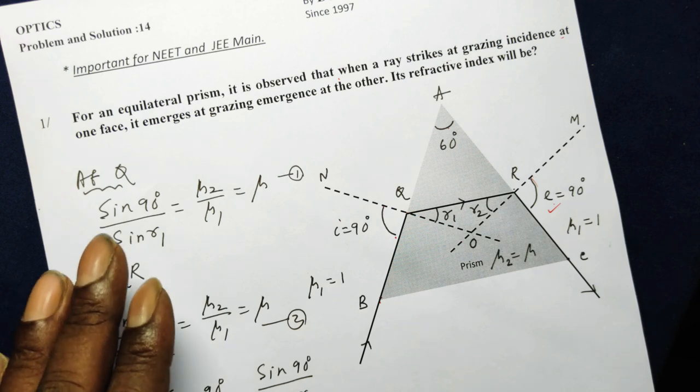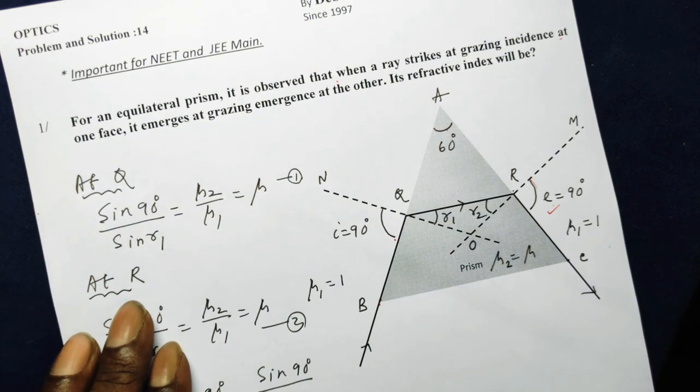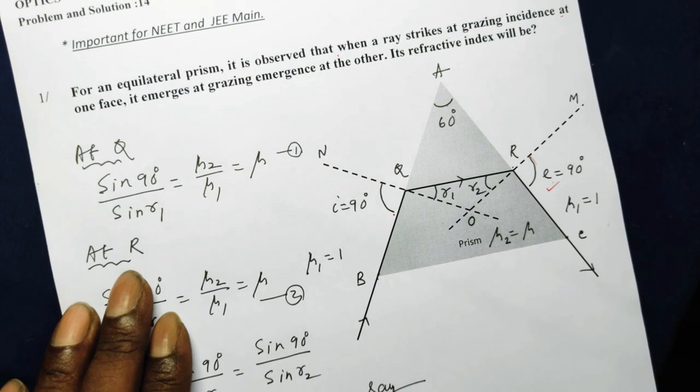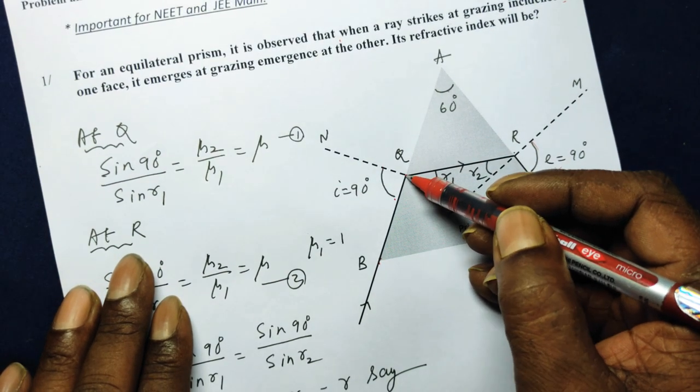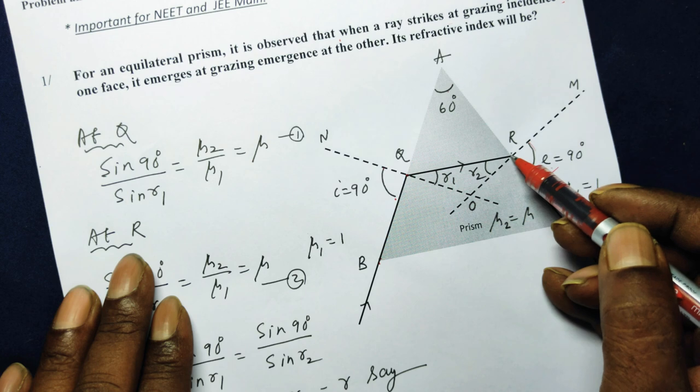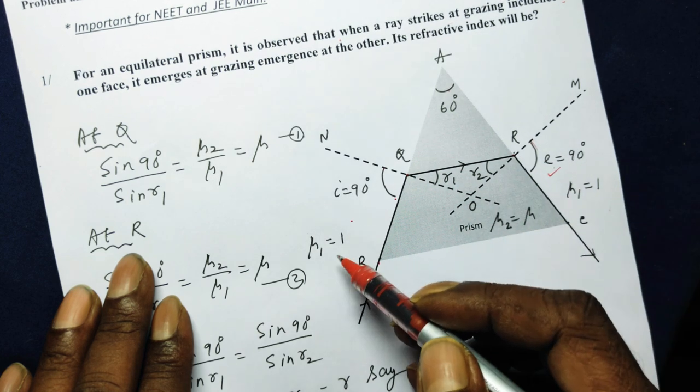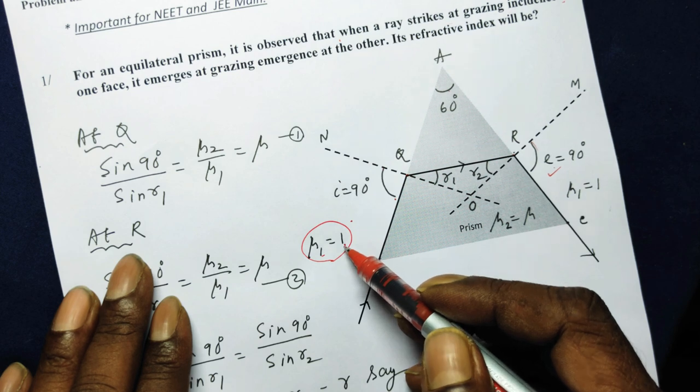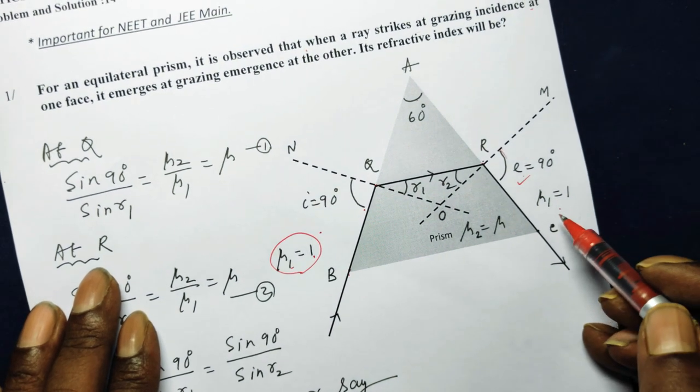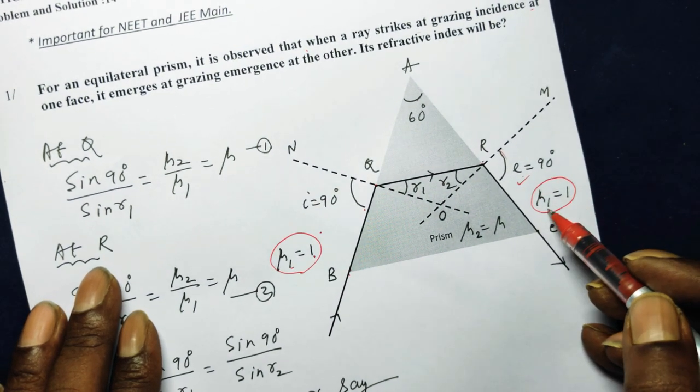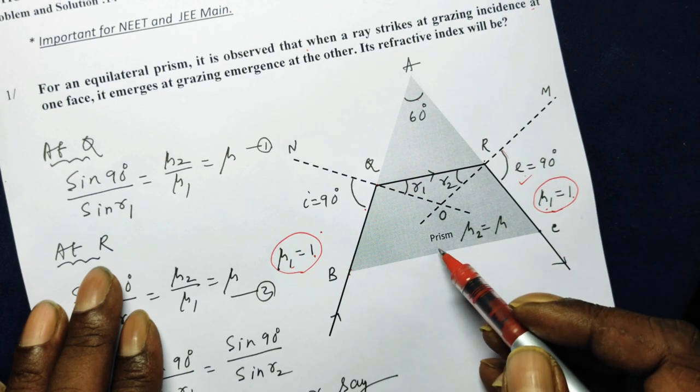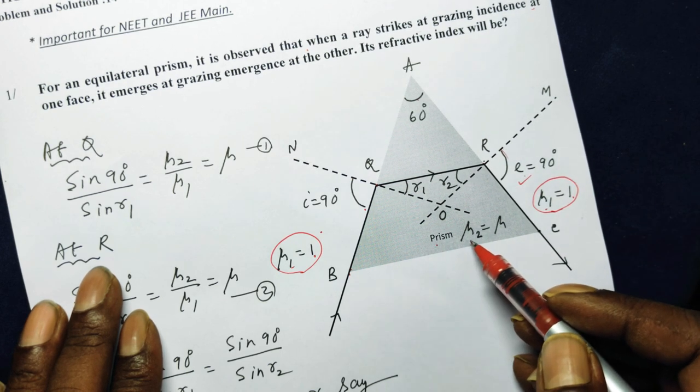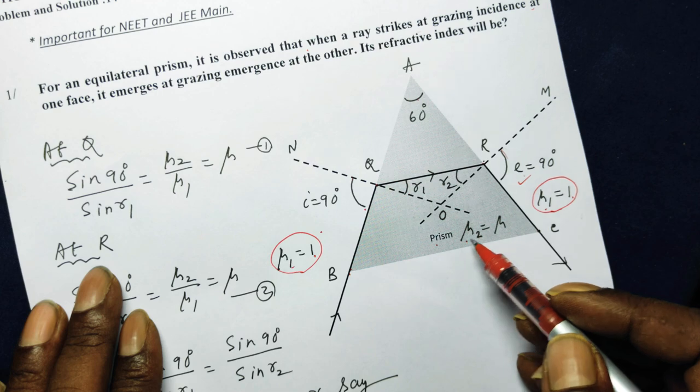Now then we have to find out its refractive index. So let us apply the second law of refraction, Snell's law here, and we will apply also here. This side is a rare medium, mu1 is equal to 1, either air or vacuum. On this side also, the same rare medium mu1 is equal to 1, and the refractive index of the prism I have taken is mu2, let it be mu.